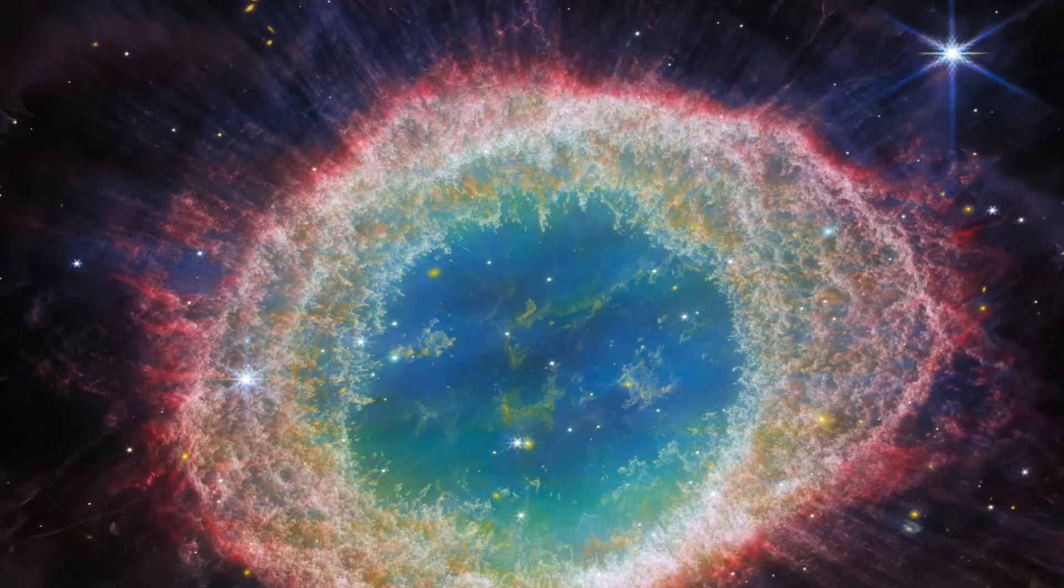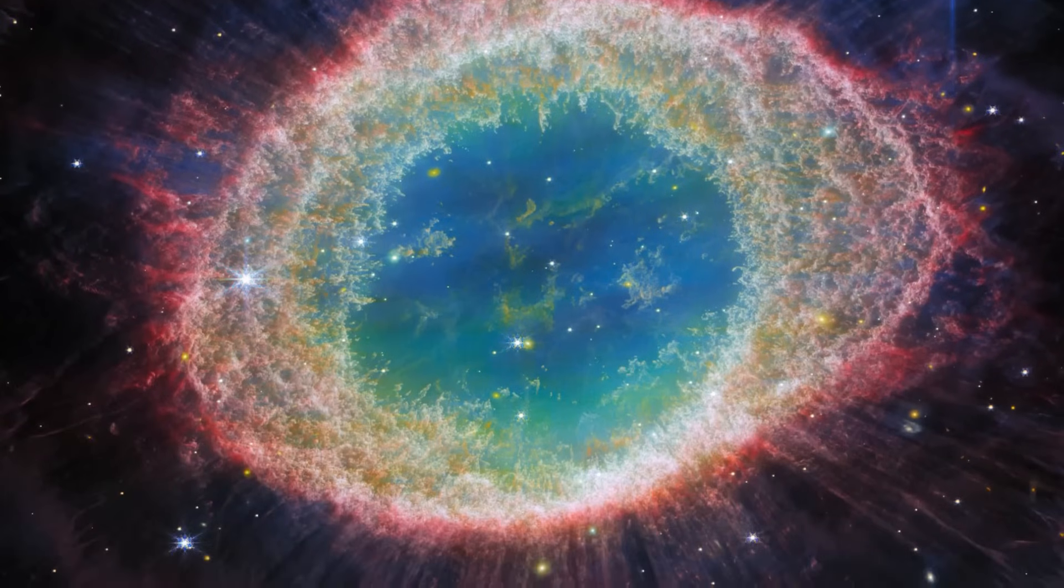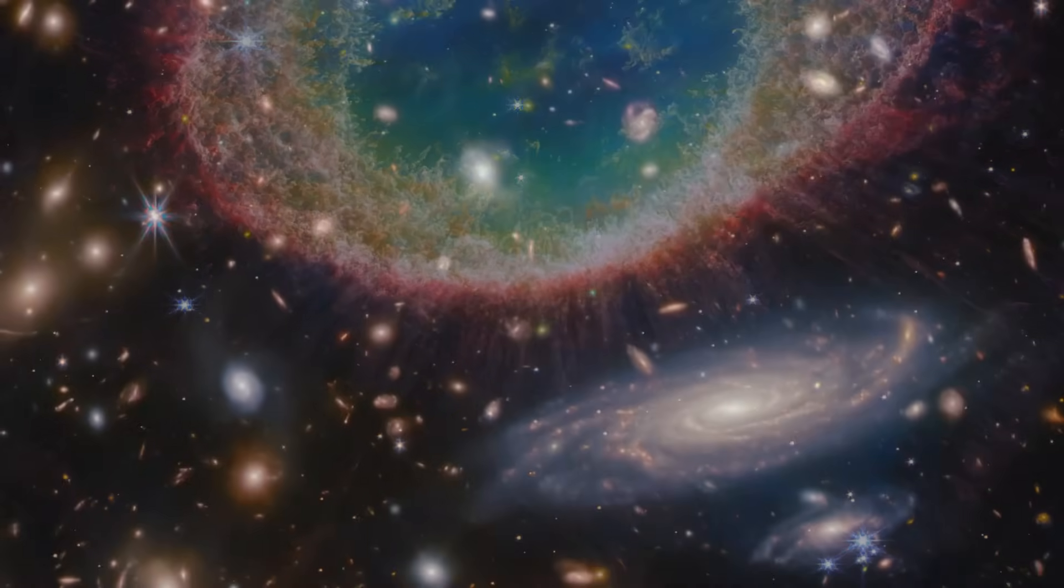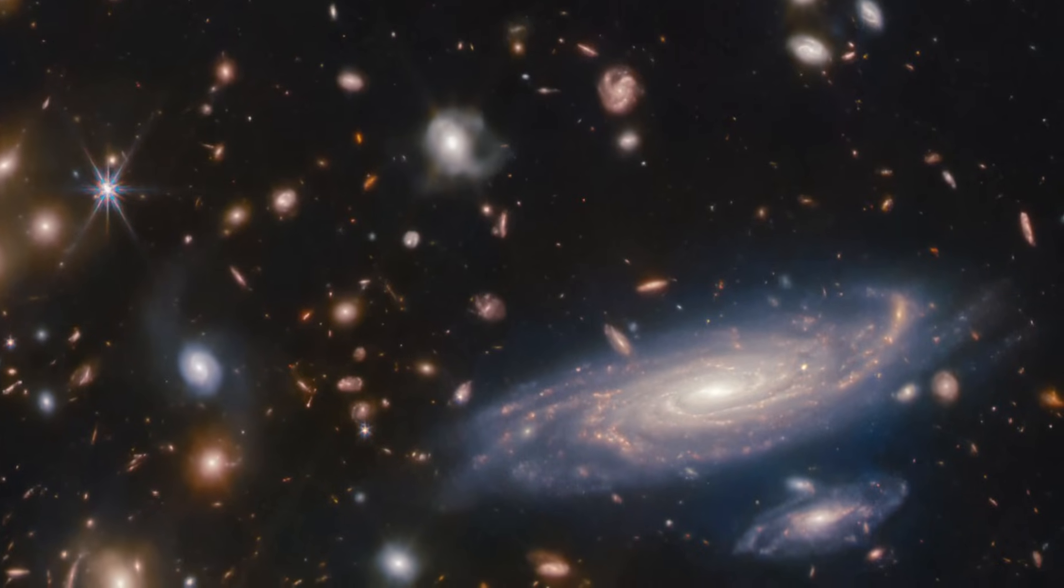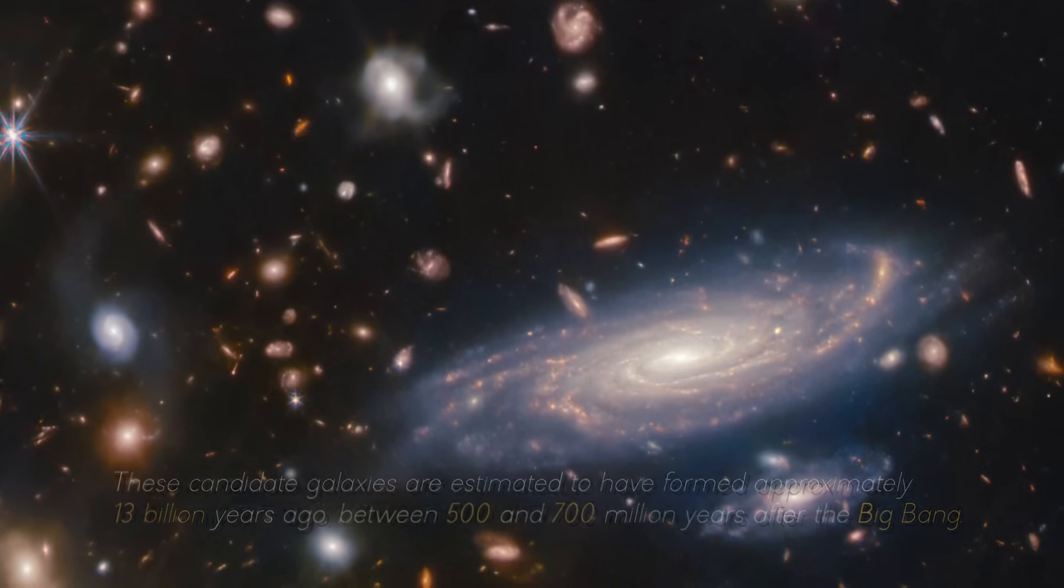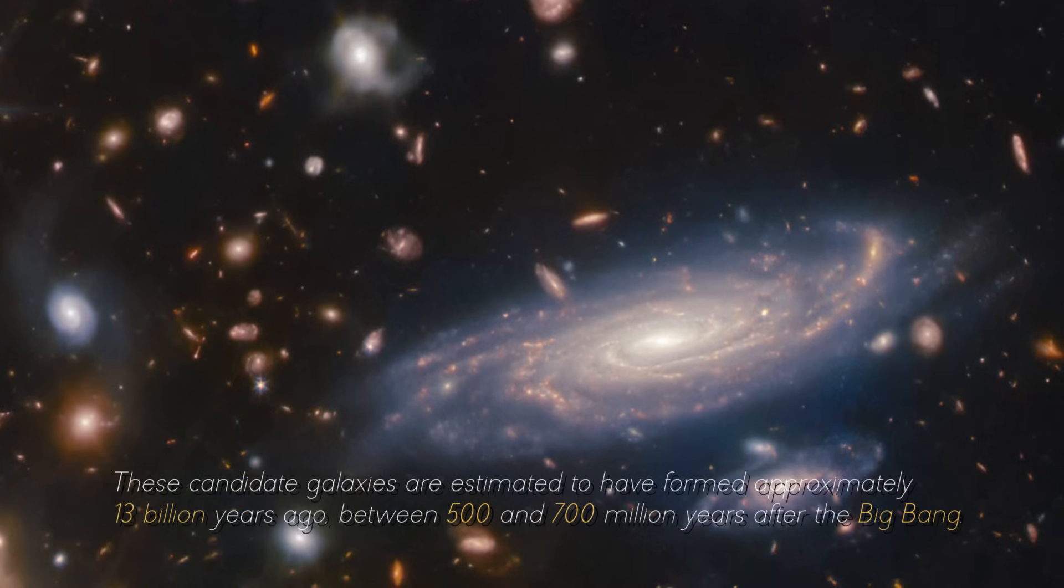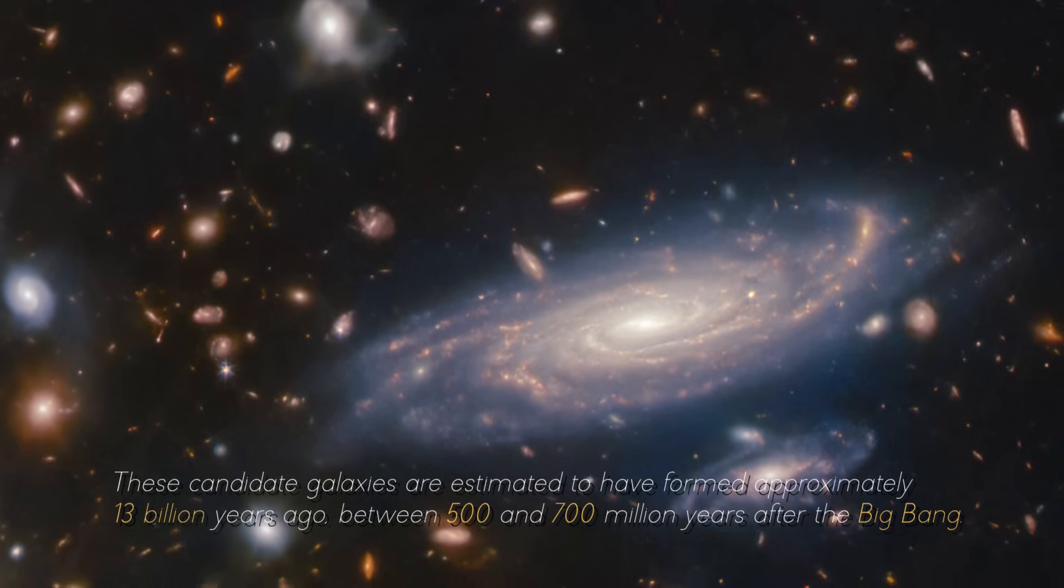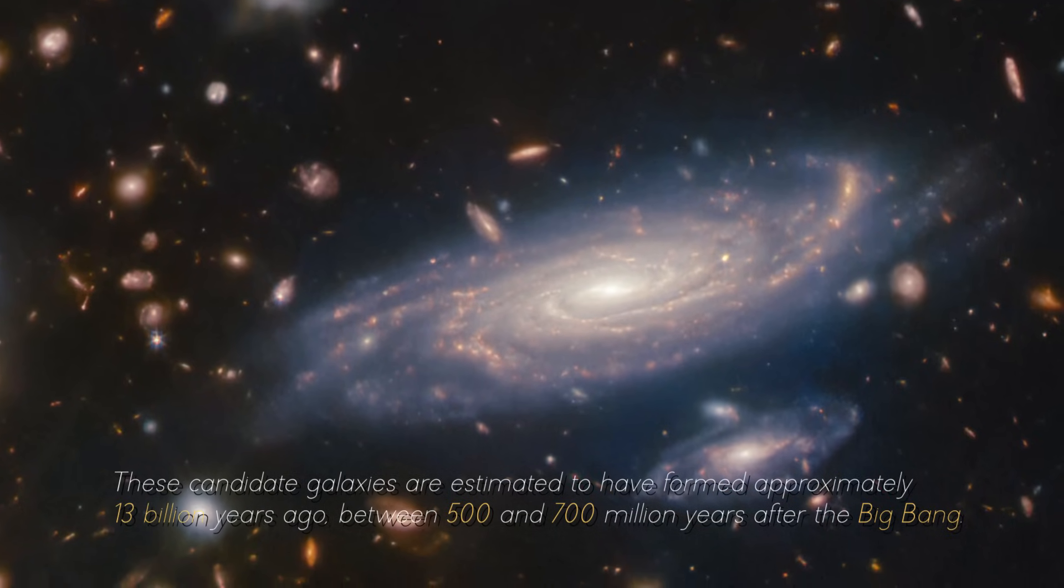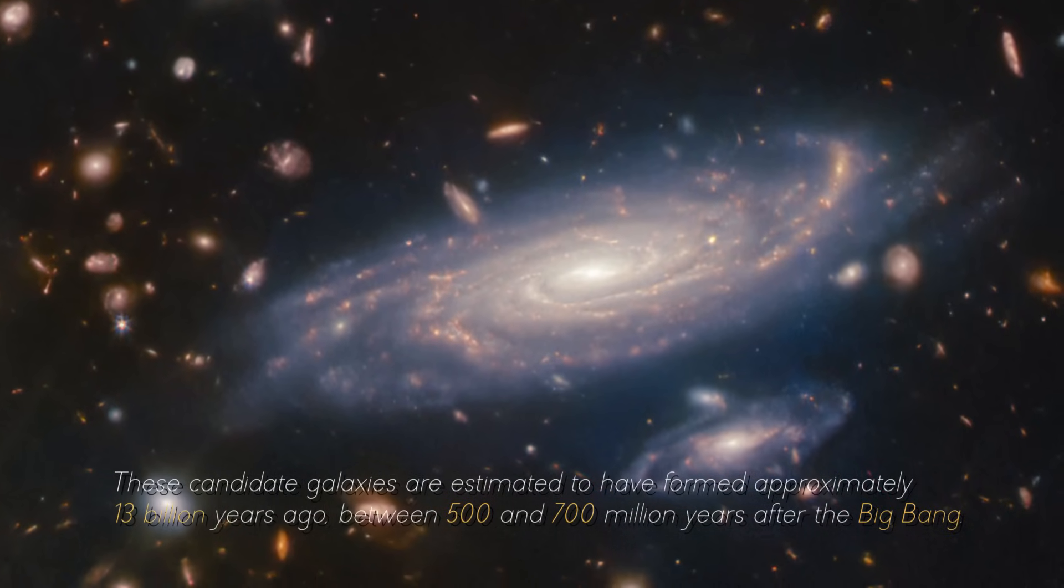Images captured by the James Webb Space Telescope are challenging the Big Bang theory, as they show galaxies of enormous sizes that appear not to have been able to exist or are not consistent with the Big Bang theory. These candidate galaxies are estimated to have formed approximately 13 billion years ago, between 500 and 700 million years after the Big Bang.